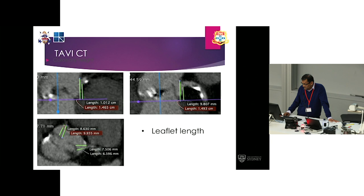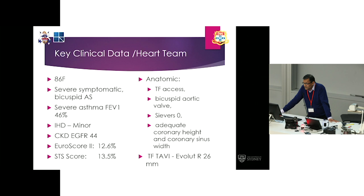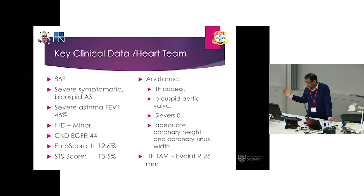In the presentation to the HEART team, this 86-year-old lady was deemed to be at high risk for conventional surgery in the context of severe lung disease and chronic renal impairment. Based on that, she was accepted for transcatheter implantation. A note was made that it was a Seavers type 0, and the plan was to use a repositionable TAVI valve — an Evolute R — which had been elegantly demonstrated in the preceding case.